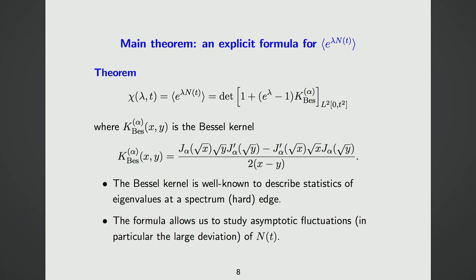Our main result—a kind of theorem—is an explicit formula for the moment generating function of the integrated current. We found that this quantity can be written as a Fredholm determinant with the Bessel kernel, which is given by a well-known expression. This continuous Bessel kernel is well-known to describe the statistics of eigenvalues at the so-called hard edge of the spectrum in random matrix theory.